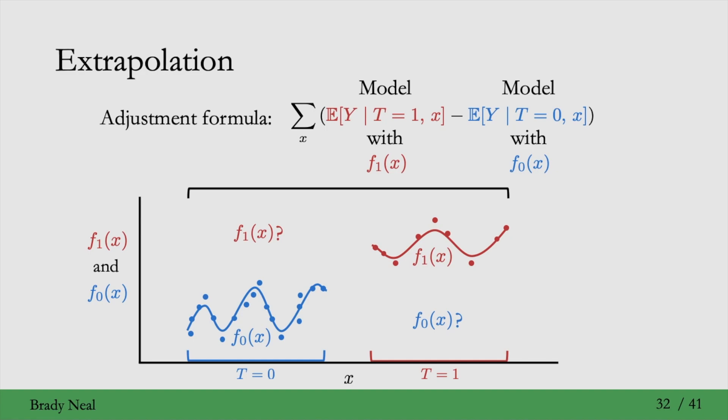So we need to know the value of f₁(x) over here to the left, and we need to know the value of f₀(x) over here to the right. But we don't have data there. We don't have data there because we have a severe positivity violation. And what are our models going to do? They have to extrapolate. They're forced to extrapolate because they need to sum over all x. And this extrapolation is going to cause severe issues. So this is a consequence of having severe positivity violations and using a model to model the conditional expectation when that's the case.